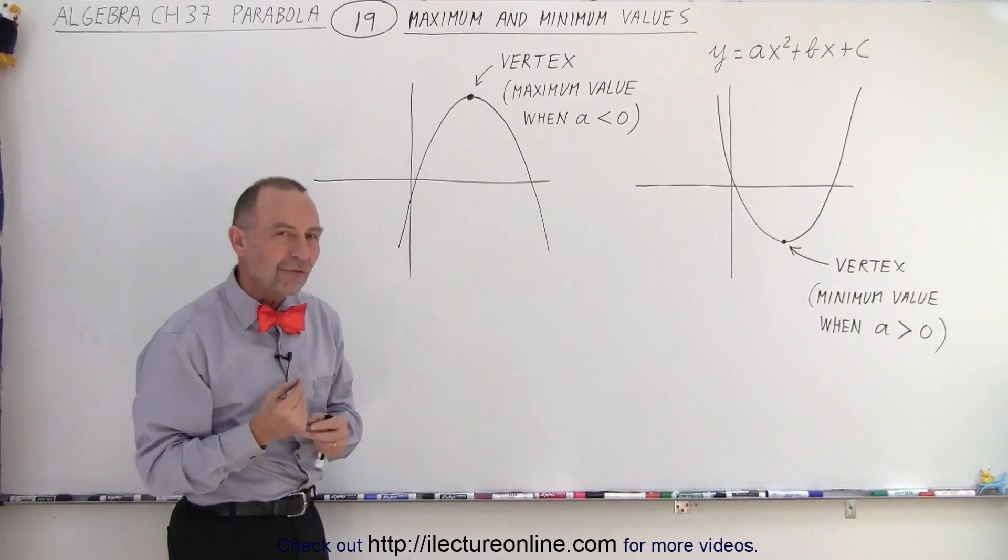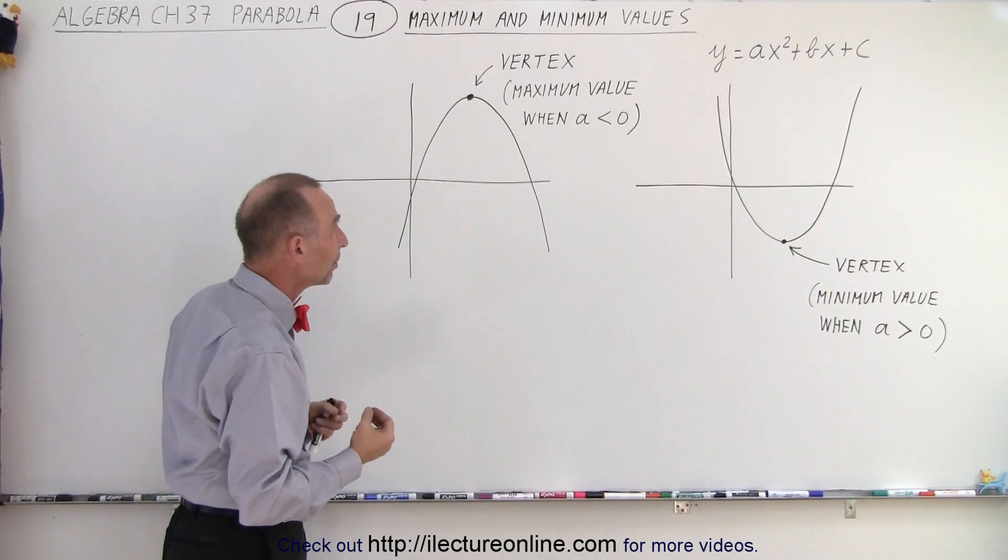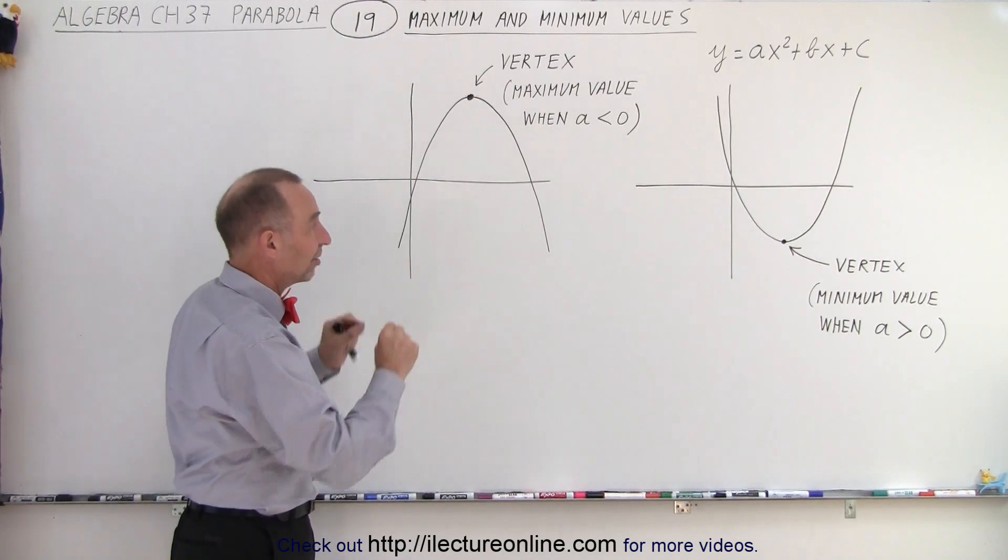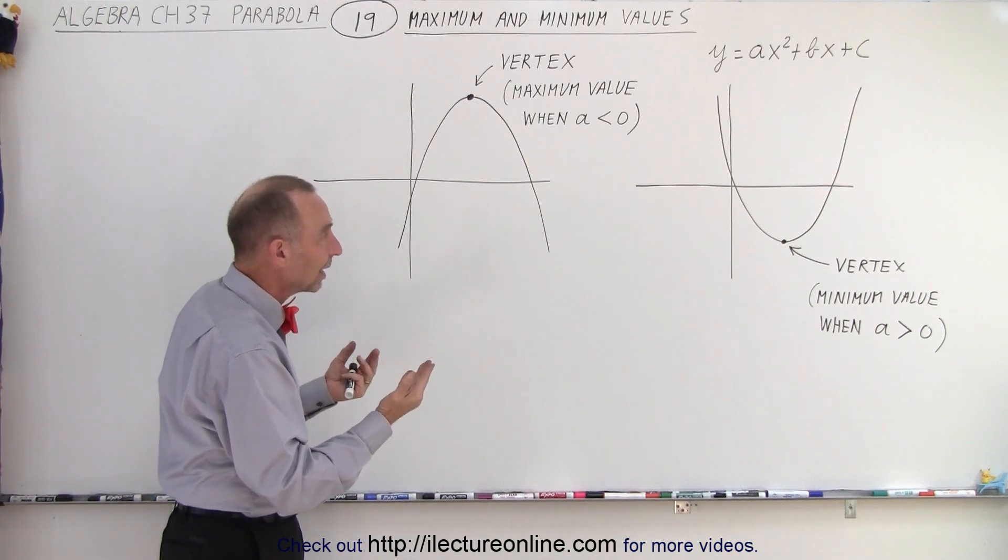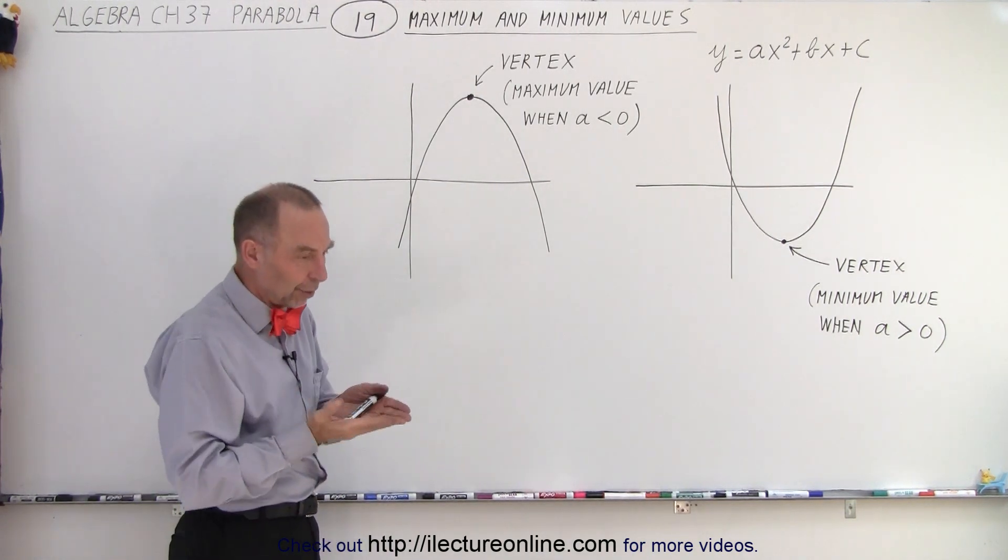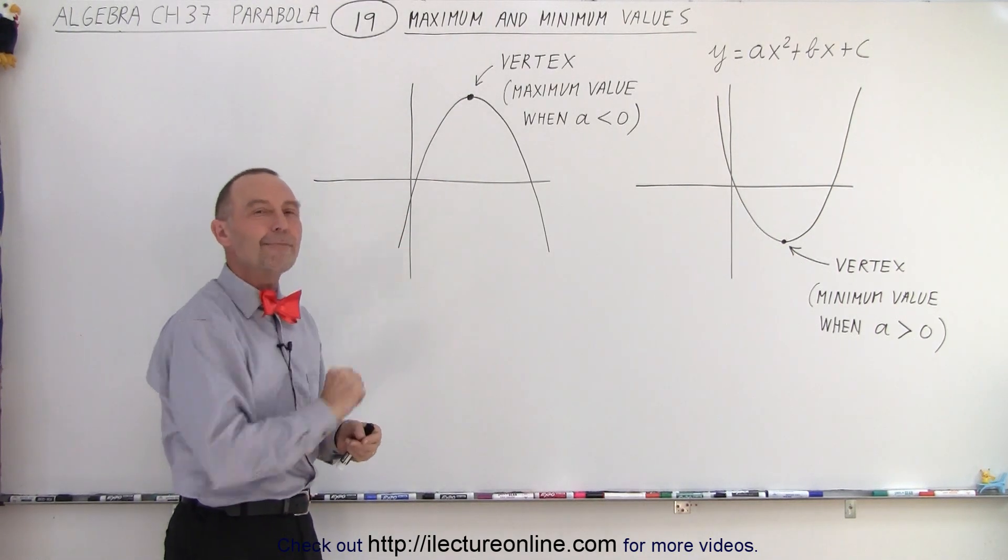So the maximum value and the minimum value of a parabola is a very important concept. We can find that by simply, first, knowing where the vertex is, and we know how to do that. And secondly, knowing whether or not the parabola opens upward or opens downward. When it opens upward, it's a minimum value. When it opens downward, it's a maximum value.